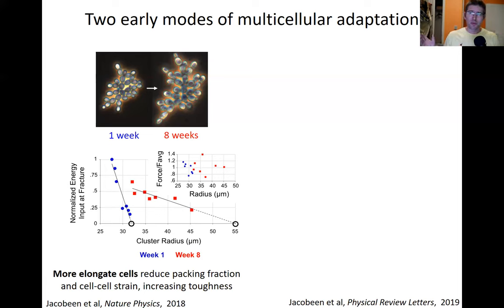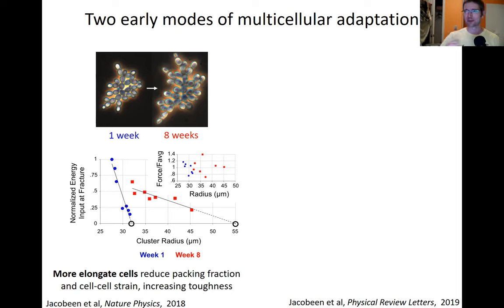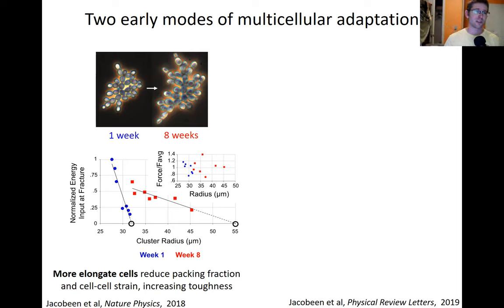We've done this experiment many different ways over years and we always see the same thing. Our yeast evolve to get larger through two primary routes of adaptation. First, they make their cells more elongate. Using an atomic force microscope to crush clusters and measure fracture energy: rounder-celled ones are pretty brittle and really lose the ability to absorb energy as they get bigger. The more elongate-celled ones have a much shallower slope — they're more resilient material and take much more force to fracture.